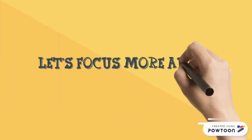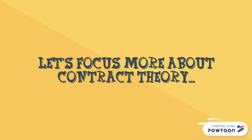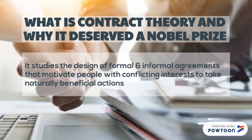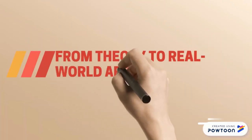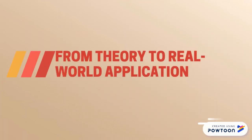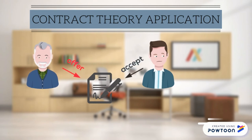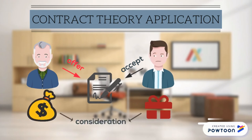Let's focus more on contract theory. What is contract theory and why did it deserve a Nobel Prize? It studies the design of formal and informal agreements that motivate people with conflicting interests to take mutually beneficial actions. From theory to real world application: during the negotiating phase between two parties, until one side accepts there can be a series of offers and counteroffers, and there is no contract. However, at the very base of negotiating is something of value that the parties desire from each other — this is consideration. Without consideration, no contract.